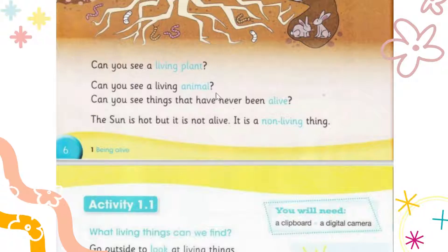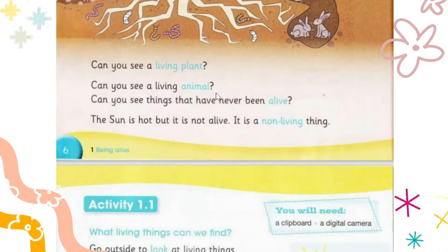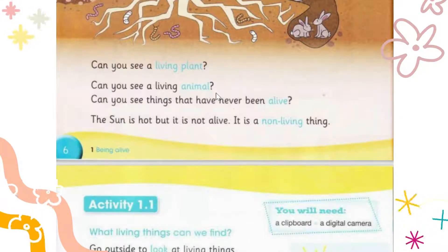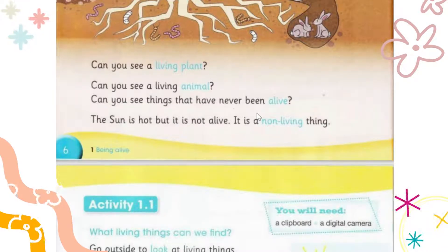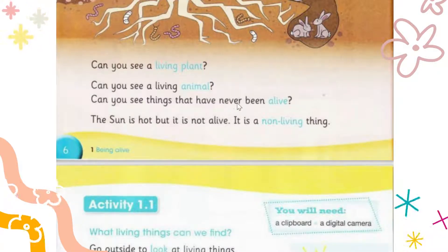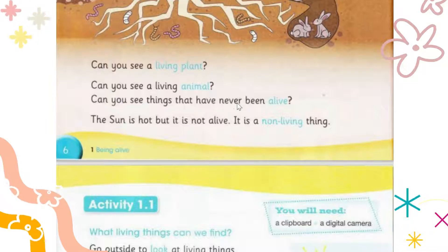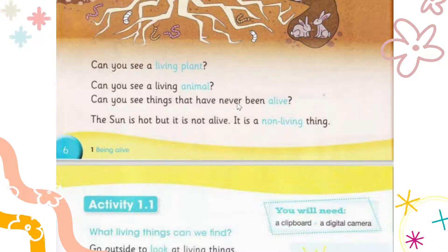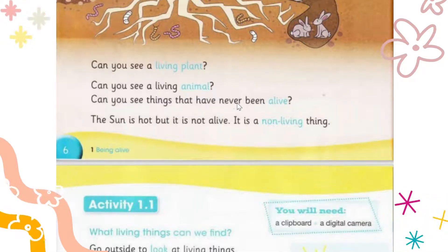Can you see a living animal? Yes — all animals are living. Why? Because they walk, they talk, they eat, they sleep, they excrete. These are all characteristics of living things. What about things that have never been alive? They were non-living from the start — they were never alive. What are non-living things? All things that don't grow, don't eat, don't sleep, don't walk, don't have feelings — those are non-living things.